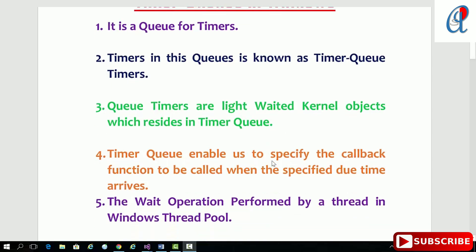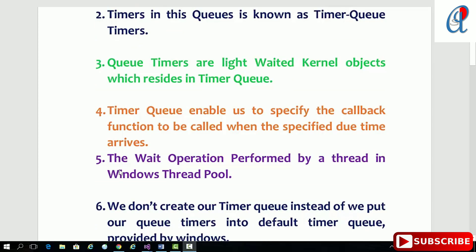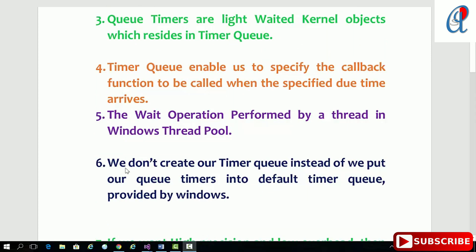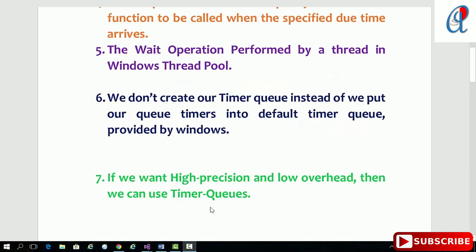Timer queue enables us to specify a callback function to be called when the specified due time arrives. The wait operation is performed by threads in the Windows thread pool, which is provided by the OS. We will use this in our program, and instead of creating our own timer queue, we put our queue timers into the default timer queue provided by Windows.